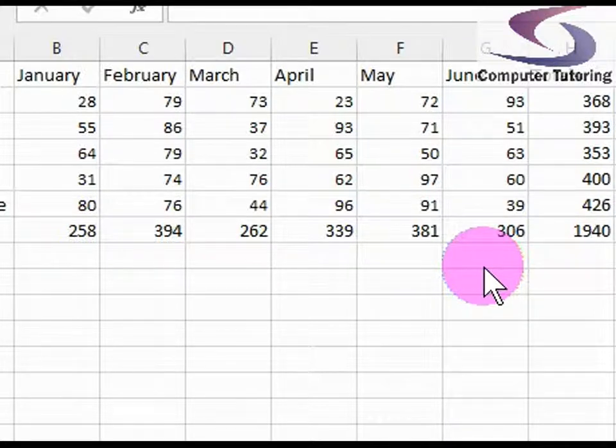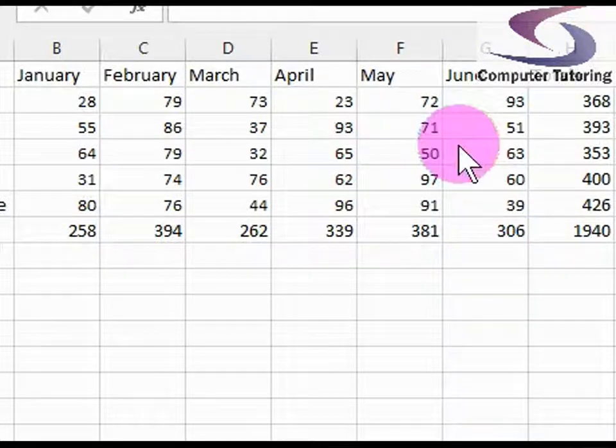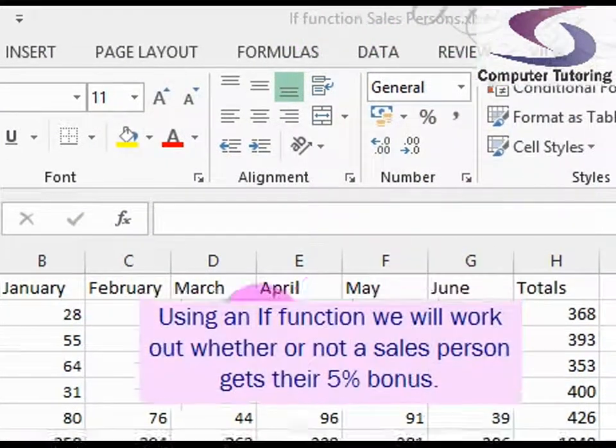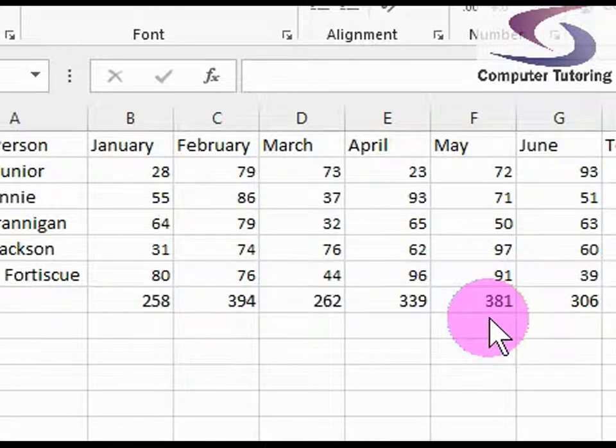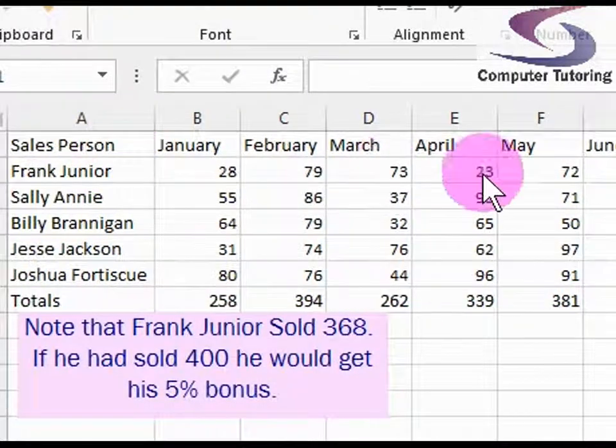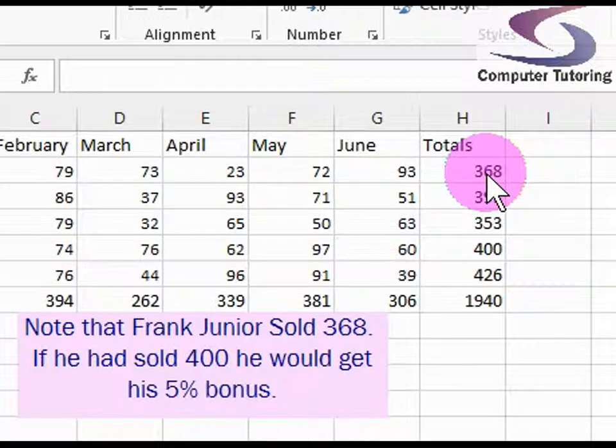In this instance, this exercise is the IF function salesperson's exercise. We've got salespeople here with the totals of sales. What they sell, it matters not. So you've got Frank Junior here, he's got 368.